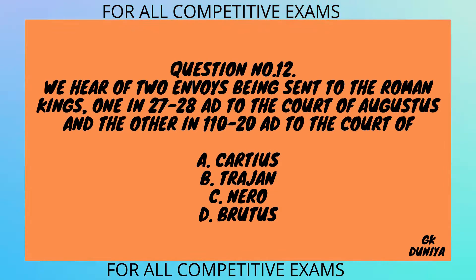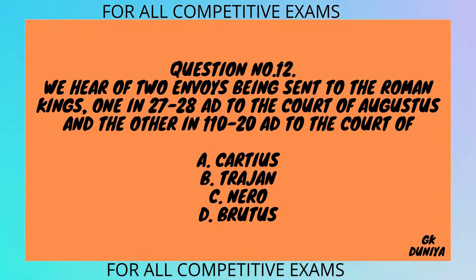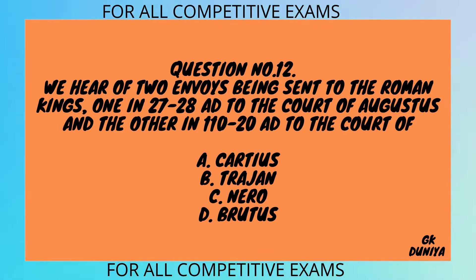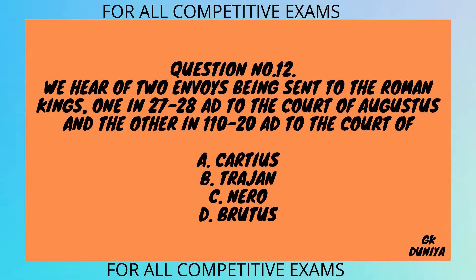Question No. 12. We hear of two envoys being sent to the Roman kings — one in 27–28 AD to the court of Augustus and the other in 110–28 AD to the court of: A. Cassius, B. Trajan, C. Nero, D. Brutus.